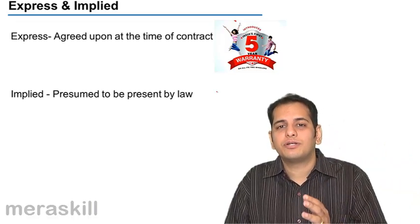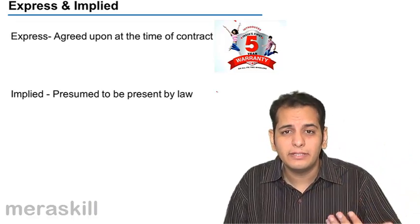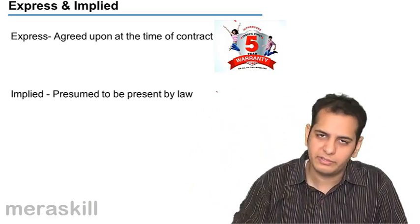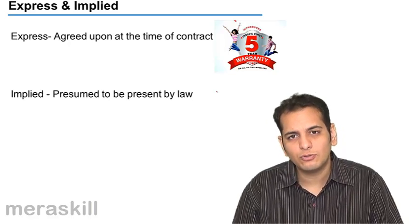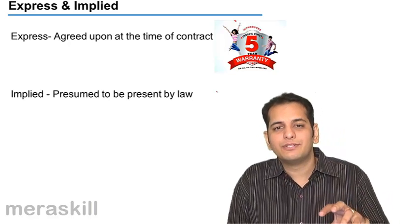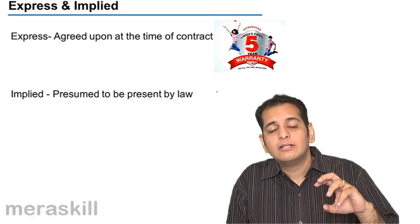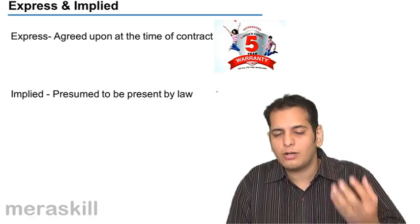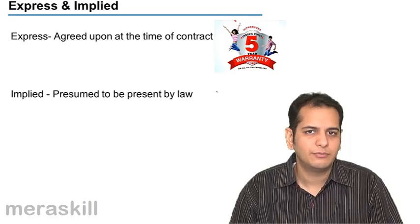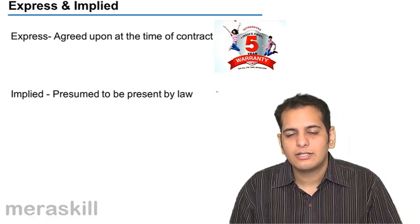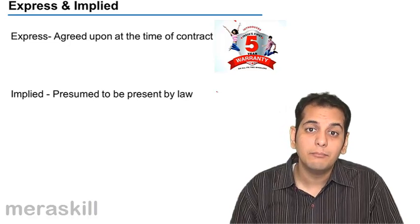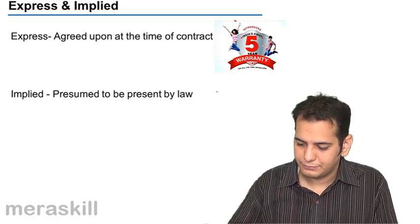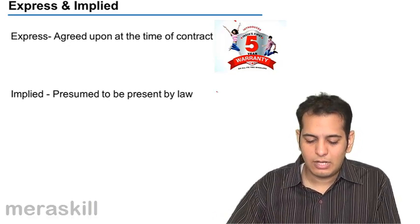There are some conditions and warranties which may not be expressed by the buyer and seller to each other, but they are implied by law on them. Though they have not decided on those terms, such stipulations, such conditions and warranties are imposed on the buyer and seller by law. The law tells them to abide by these conditions and warranties — such conditions and warranties are called implied conditions.